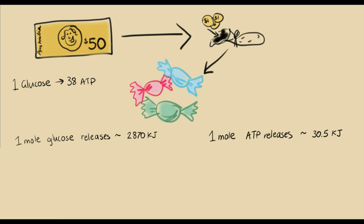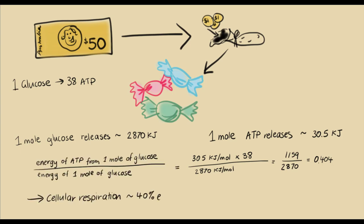We can calculate the efficiency by comparing the energy of 38 moles of ATP with one mole of glucose. And if we divide ATP by glucose, we end up with around 0.4, which means cell respiration is about 40% efficient. 40% of the energy from that glucose is converted directly into ATP that the cell can use.